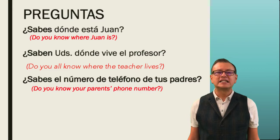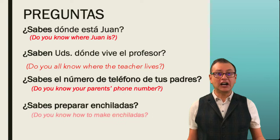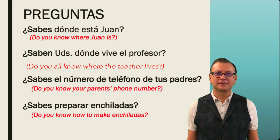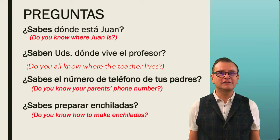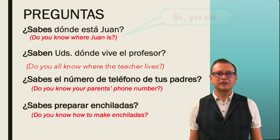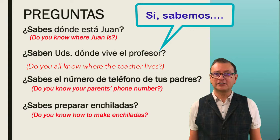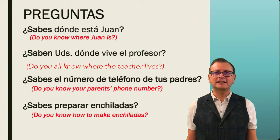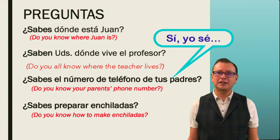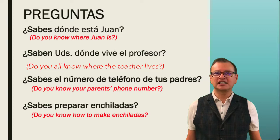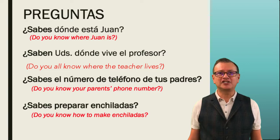¿Sabes preparar enchiladas? This is a verb of action — do you know how to make enchiladas? Notice that the first verb is the one that we answer. Are you ready to hear the answers? ¿Sabes dónde está Juan? — Sí, yo sé. ¿Saben ustedes dónde vive el profesor? — Sí, sabemos dónde vive el profesor. ¿Sabes el número de teléfono de tus padres? — Sí, yo sé el número de teléfono de mis padres. ¿Sabes preparar enchiladas? — Sí, yo sé, or sí, yo sé preparar enchiladas.